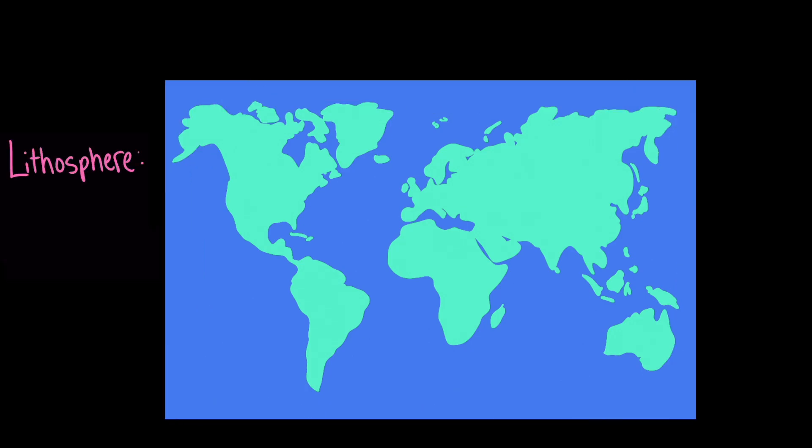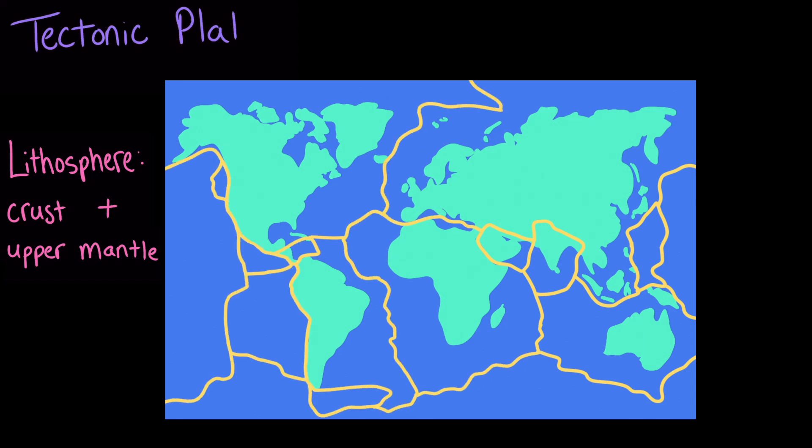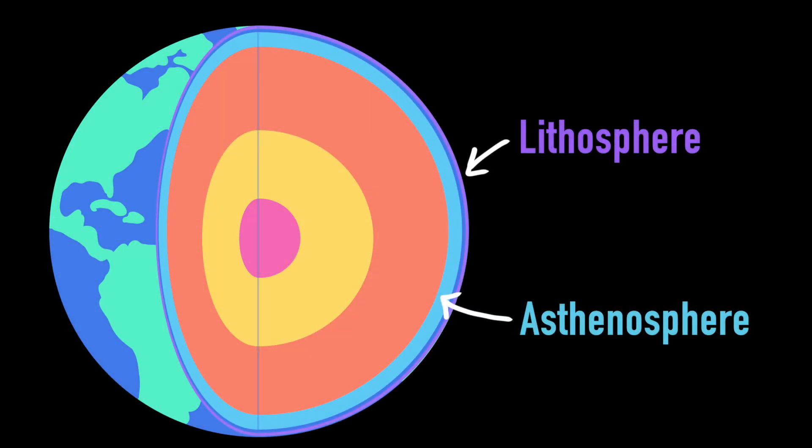Earth's lithosphere, which is made up of the crust and the upper part of the mantle, is broken up into large puzzle-piece-like chunks called tectonic plates. These tectonic plates move around slowly over millions of years on the section of the mantle below the lithosphere, which we call the asthenosphere.